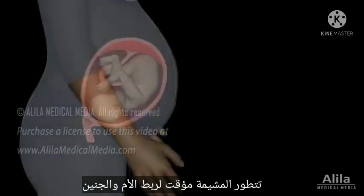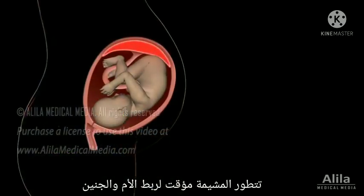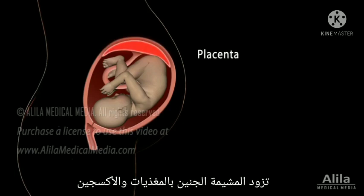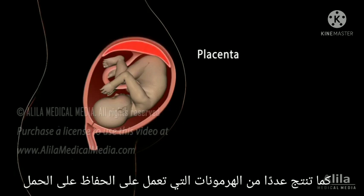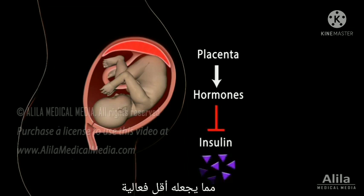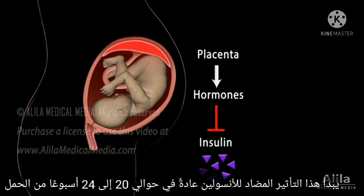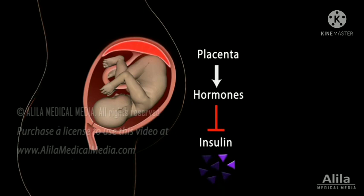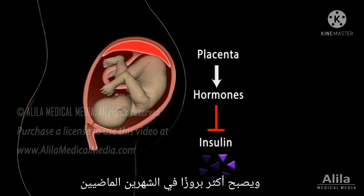During pregnancy, a temporary organ develops to connect the mother and the fetus, called the placenta. The placenta supplies the fetus with nutrients and oxygen, as well as produces a number of hormones that work to maintain pregnancy. Some of these hormones impair the action of insulin, making it less effective. This insulin-counteracting effect usually begins at about 20 to 24 weeks of pregnancy, and intensifies as the placenta grows larger, becoming most prominent in the last couple of months.